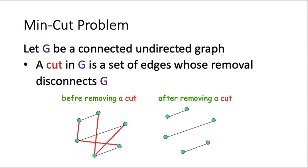In the third part of lecture 3, we will talk about a new problem called min-cut. In the input of this problem, we have a graph G which is connected and undirected. We define the cut in the graph G to be a set of edges such that if we remove the edges, then the graph will become disconnected.